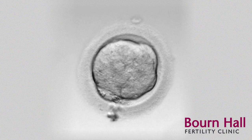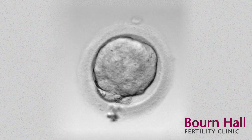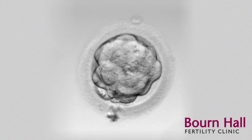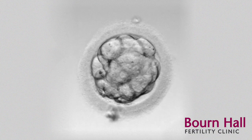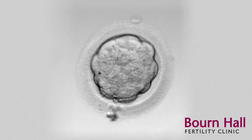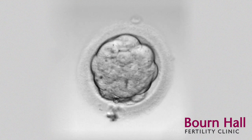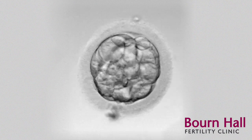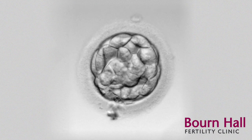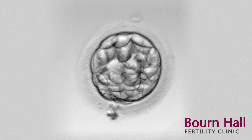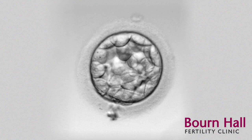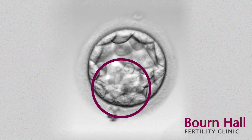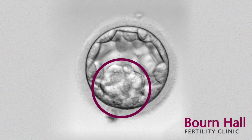The cells are differentiating into two distinct types. One part will make the placenta, which we will see forming around the outside, and the other part will make the rest of the embryo. We see a cavity start to form at the top here, and these cells organize themselves around the outside of the structure. Then we see the inner cell mass appearing down here in the bottom left, and that's the part that will form the baby.